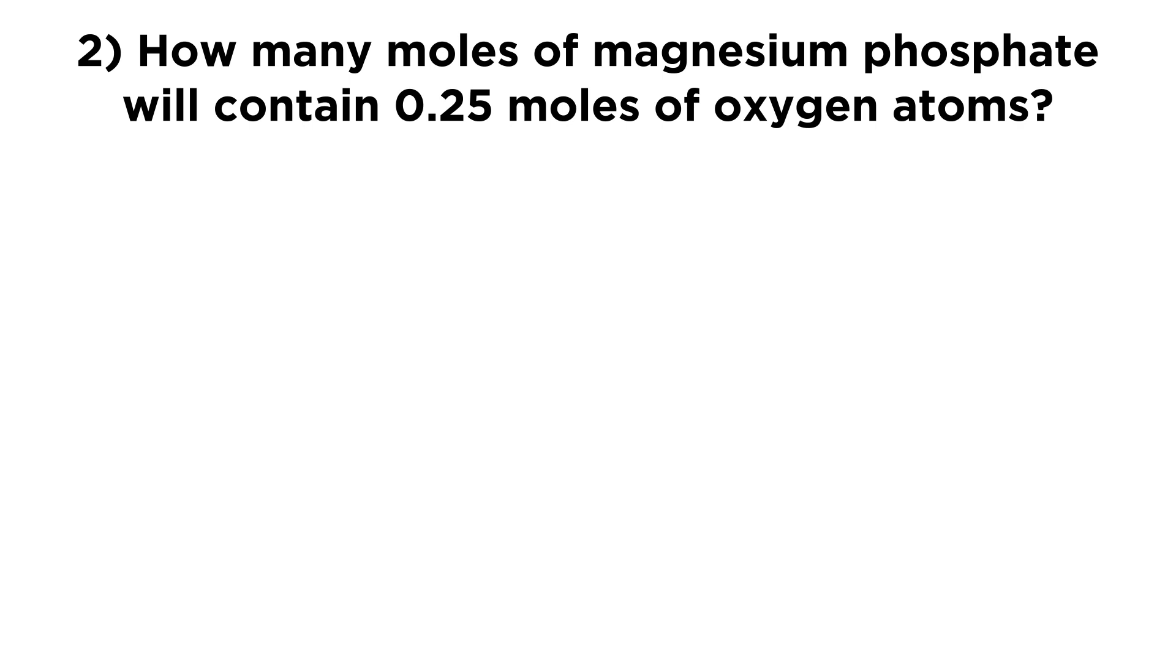Now for this second question, we're talking about magnesium phosphate. So first we need to know what the molecular formula is for magnesium phosphate. We need to know how many atoms of each element are in this compound.